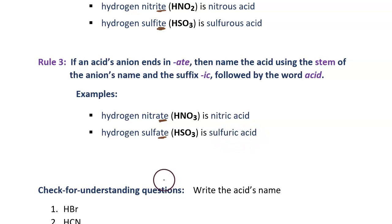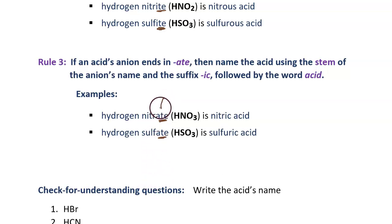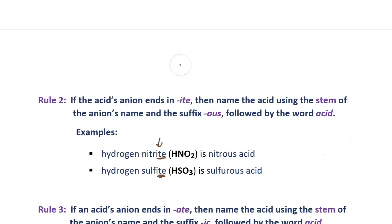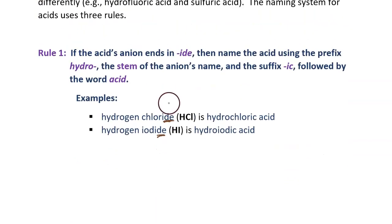So, to name acids, you use three rules, and your focus is on the ending of the anion. Does it end in "-ate", does it end in "-ite", or does it end in "-ide"? Based upon those endings, apply what the rules say to come up with the name.